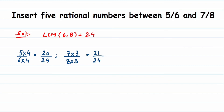Now we have denominator 24, but look at the numerators — we have 20 and 21. Between 20 and 21 there's not much gap; we don't have enough numbers to write down. So what to do in such a case? I'm going to find one more equivalent fraction of 20/24 and 21/24 so that the gap between these two numbers will increase and I can easily find the rational numbers between them.